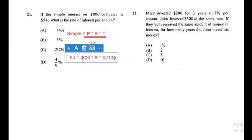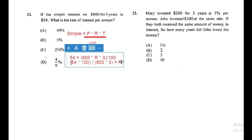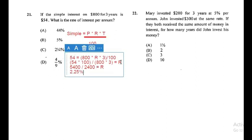We transpose to find R, making R the subject of the formula. It becomes $54 multiplied by 100, all divided by $800 multiplied by 3. That gives us 2.25, which is the same as a quarter. So R equals 2.25%, and our answer is C.